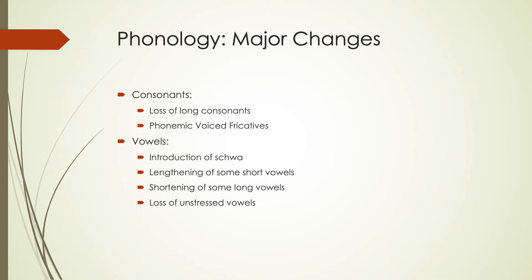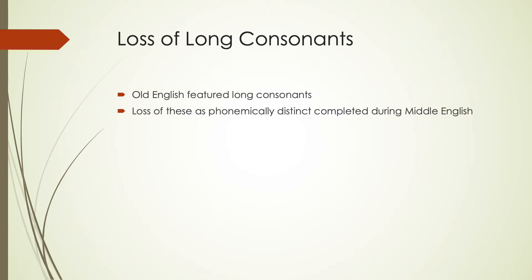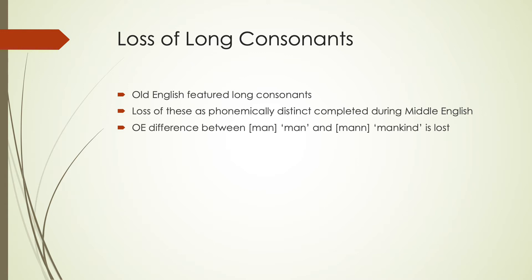Looking at consonant changes first: there is a long consonant loss in Middle English. Old English featured long consonants, and the distinction is lost during the Middle English period. For instance, the Old English difference between 'man' for 'man' and 'mann' for 'mankind' is lost. It's no longer a phonemic distinction, which is why we now use 'man' in both ways — to refer to a person or to mankind — using the same form.